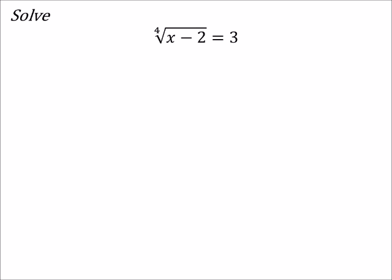Okay, on this one we've got a fourth root of x minus 2 equals 3, and since it's a fourth root all we're going to do is take both sides and take them to the power of 4.